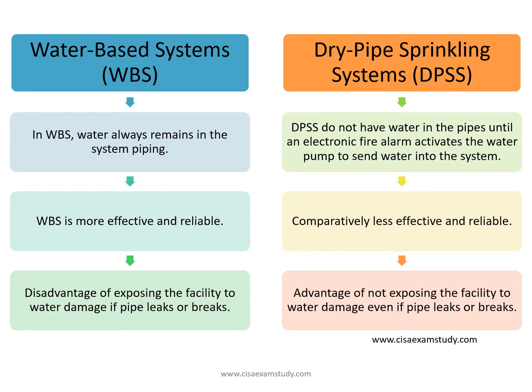The difference between water-based and dry pipe: in water-based systems, water always remains in the system piping. Whereas in dry pipe, they do not have water in the pipes until an electronic fire alarm activates the water pump to send water into the system.